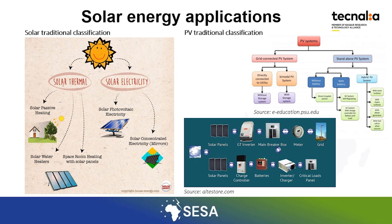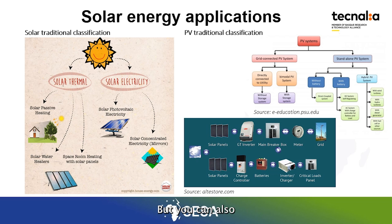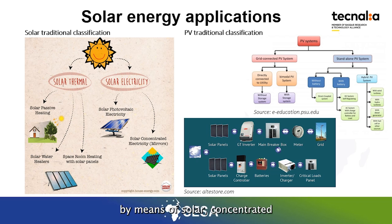When talking about solar for producing electricity, you are mainly talking about using PV — photovoltaic modules — for producing this electricity, but you can also be using solar energy for producing electricity by means of solar concentration.